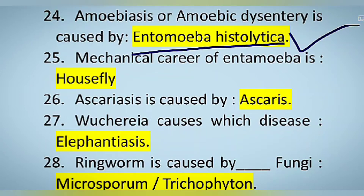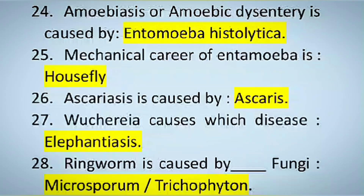The 25th question is: who is the mechanical carrier of Entamoeba histolytica? The answer is house flies, which act as a vector for Entamoeba histolytica.